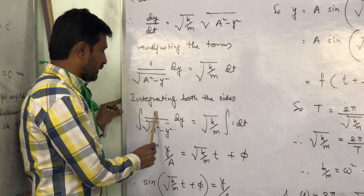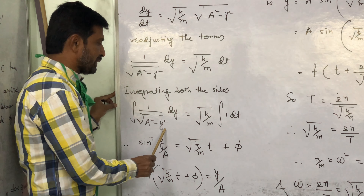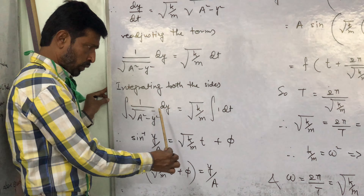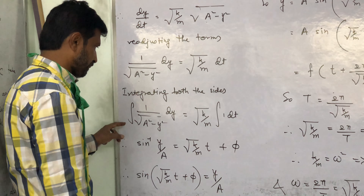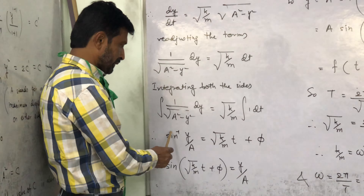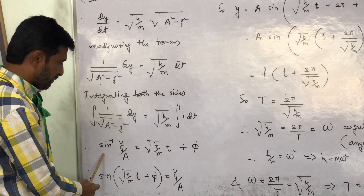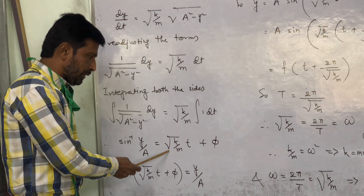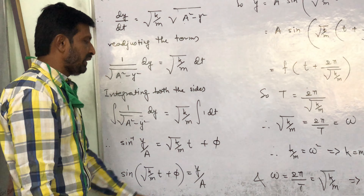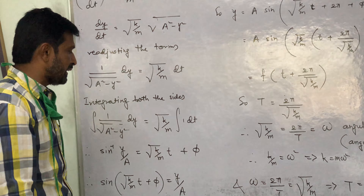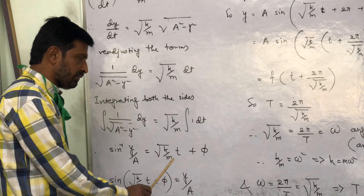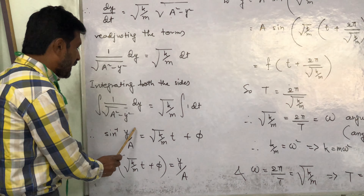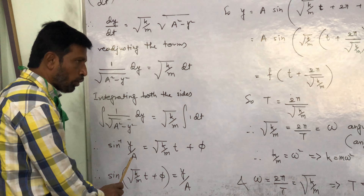Applying this: ∫1/√(a² − y²) dy = √(k/m) is a constant taken outside, times ∫dt. Using the formula, the left side integrates to sin⁻¹(y/a), giving sin⁻¹(y/a) = √(k/m)·t + φ, where φ is the constant of integration.